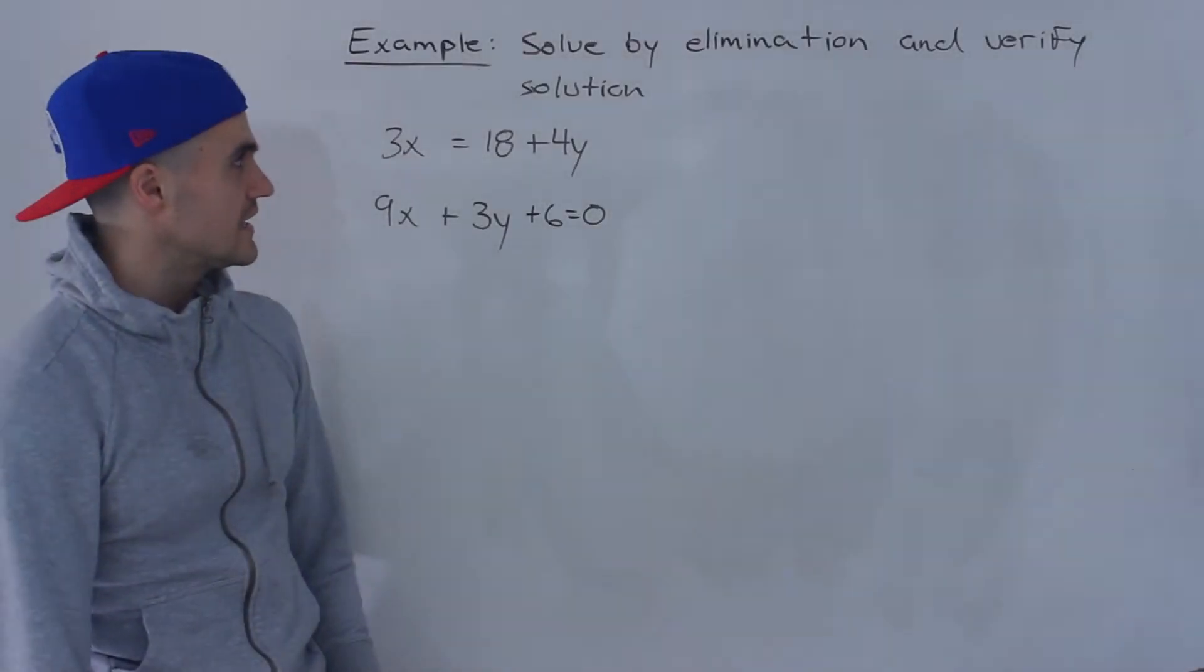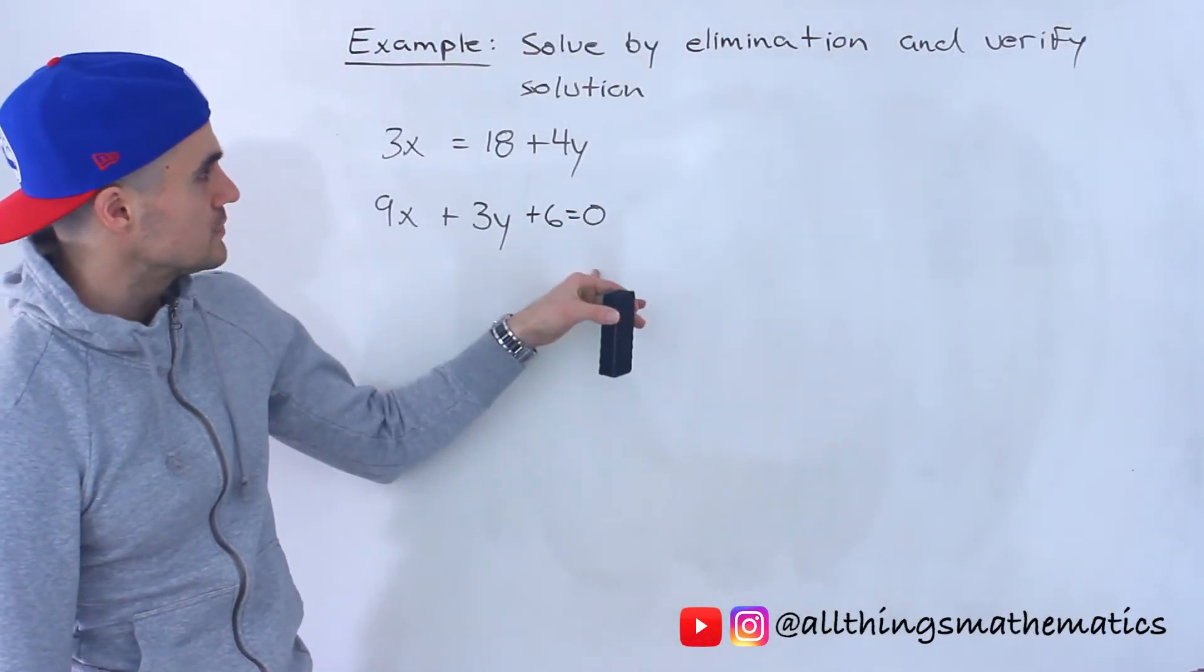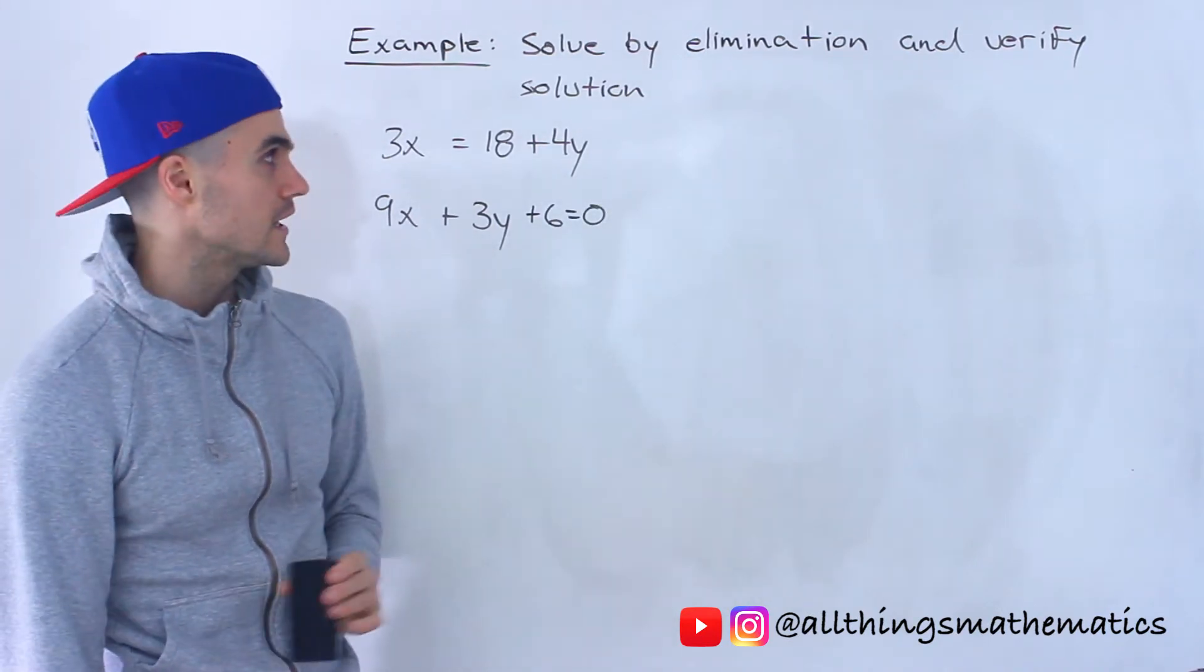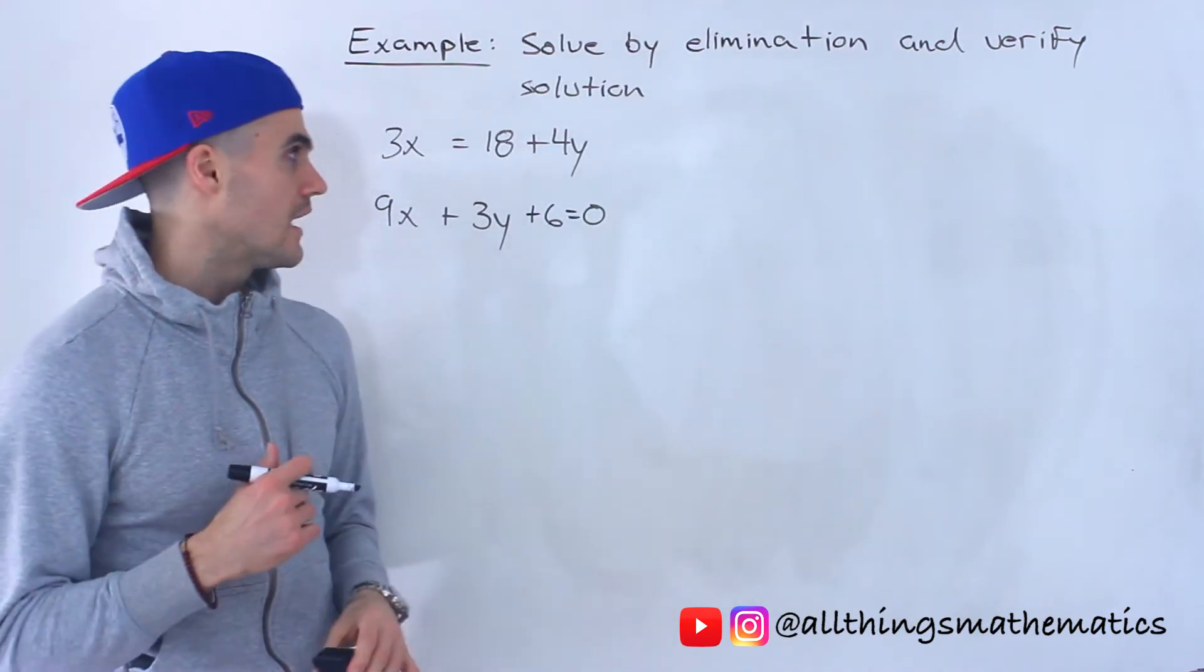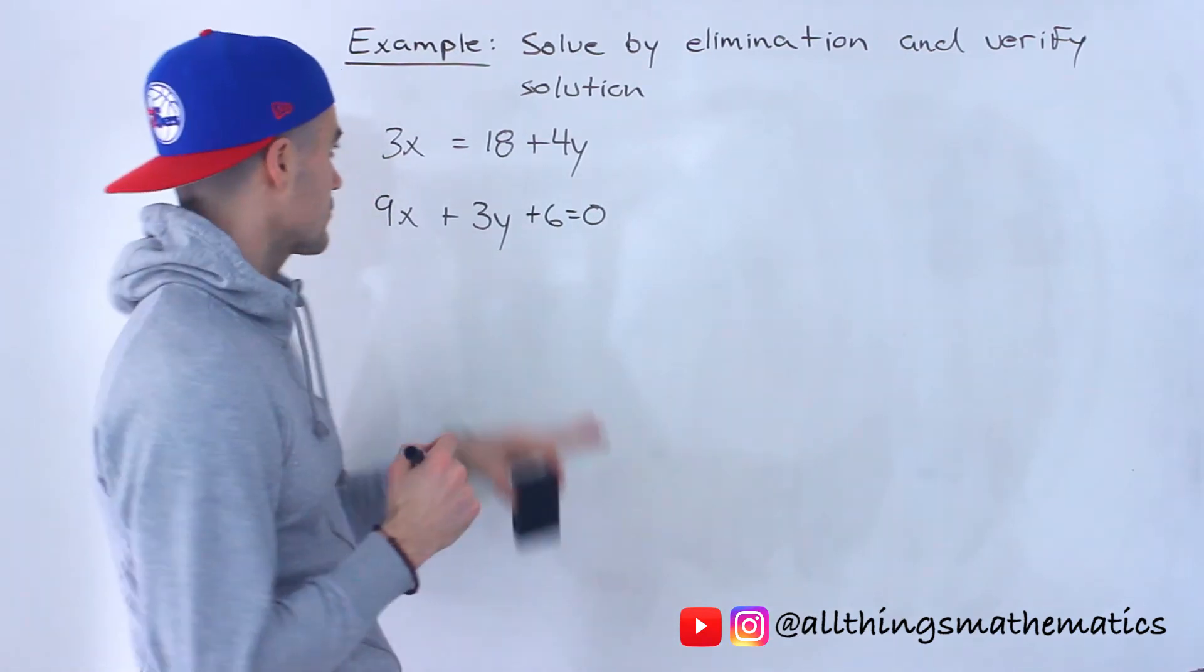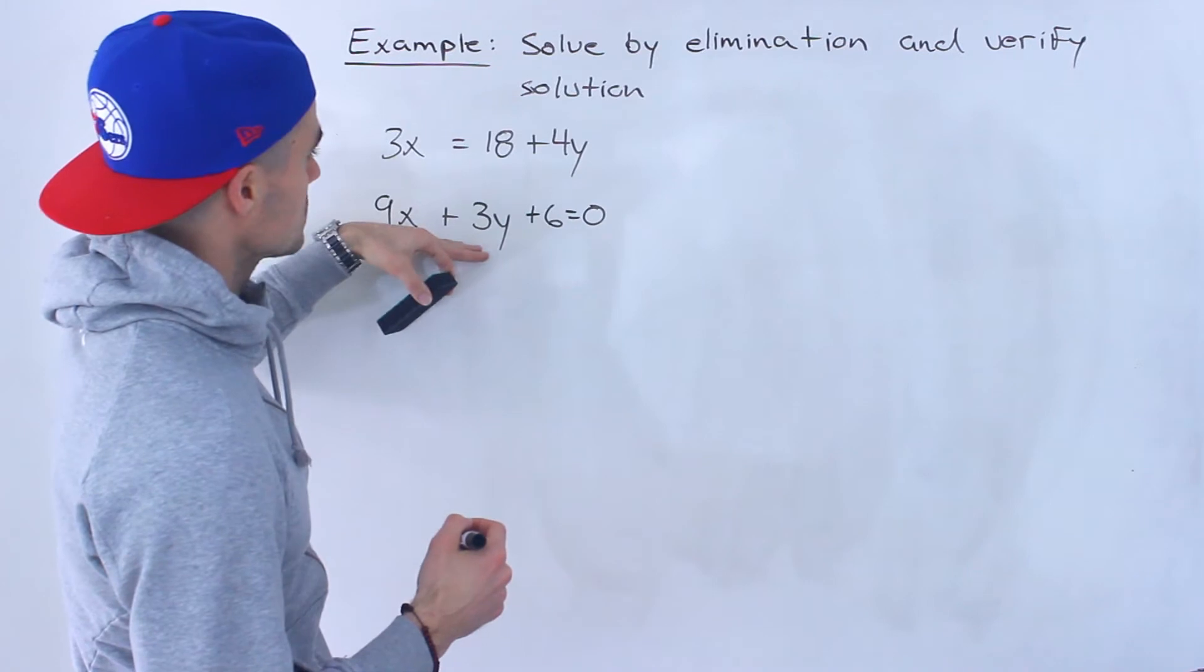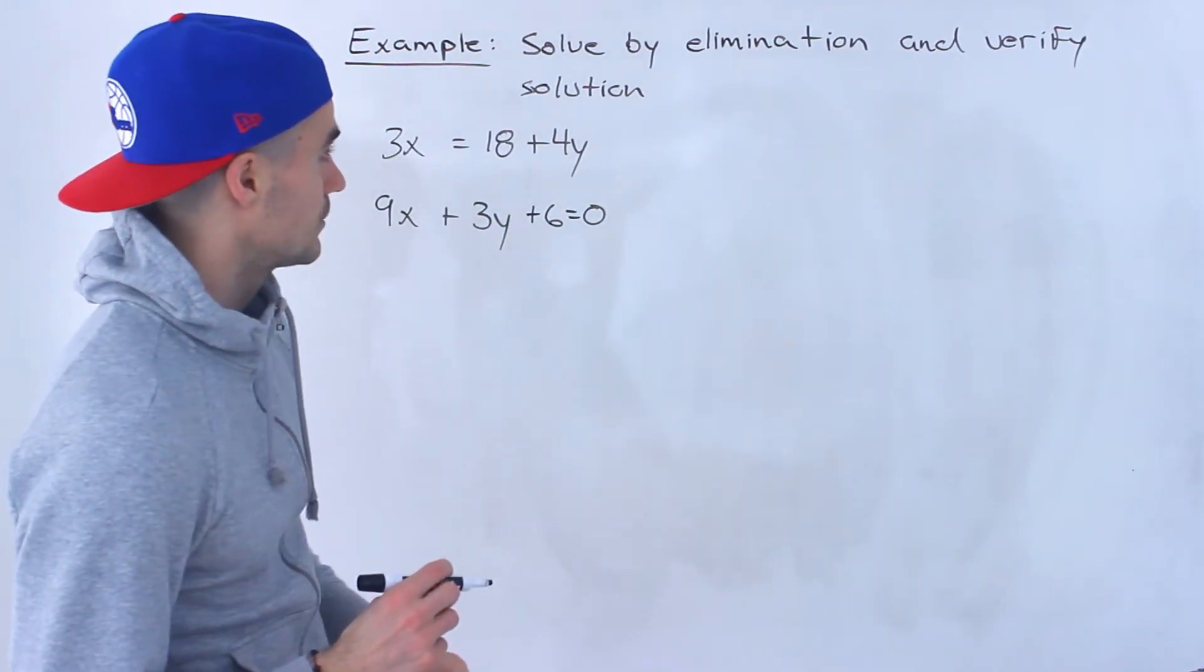Welcome back guys, moving on to the next question. We got to take these two lines here, find where they're intersecting using the method of elimination, and then verify our solution. So we got 3x equals 18 plus 4y, and we got 9x plus 3y plus 6 equals zero.